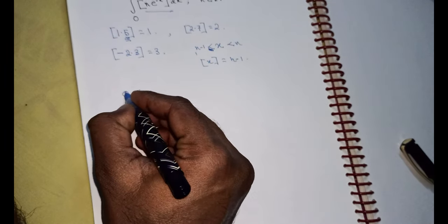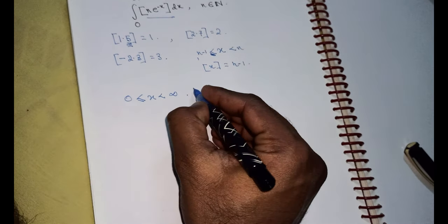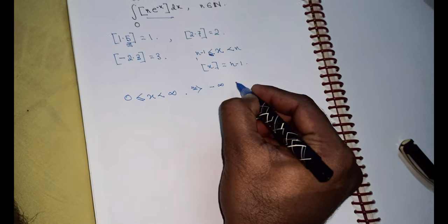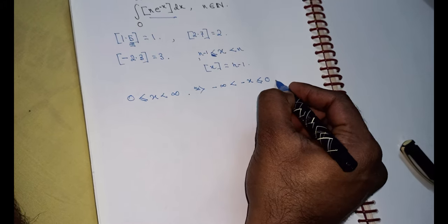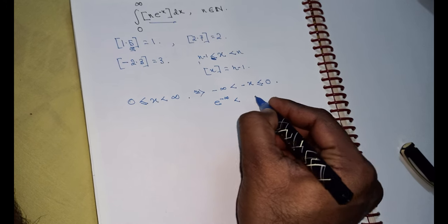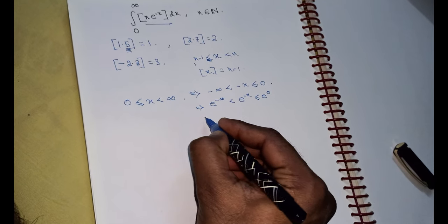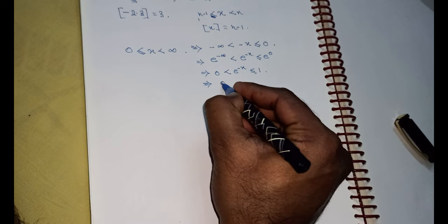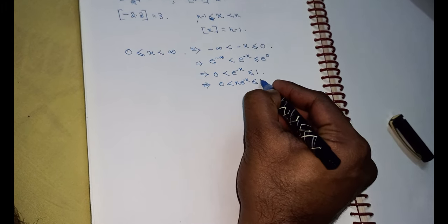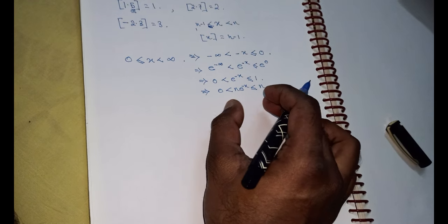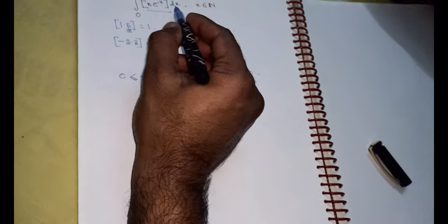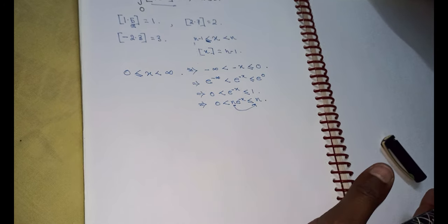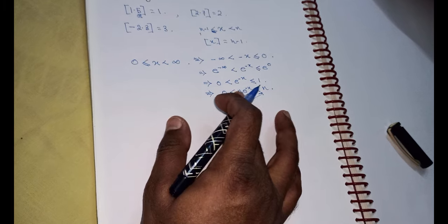Since x lies between 0 and infinity, we can say that negative infinity is less than minus x, which is less than or equal to 0. Therefore e to the power minus infinity is less than e to the power minus x, which is less than e to the power 0. This implies that 0 is less than e to the power minus x, which is less than or equal to 1. Multiplying by n, we get 0 is less than n times e to the power minus x, which is less than or equal to n. So the entire function n times e to the power minus x is bounded above by n.